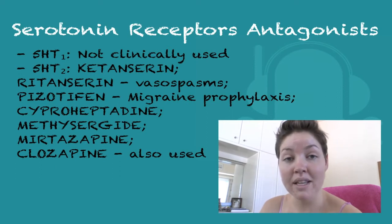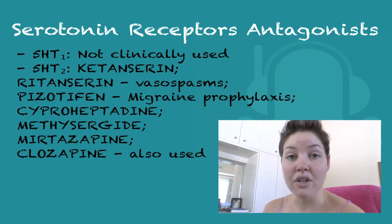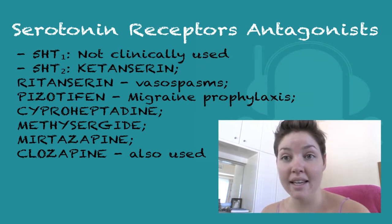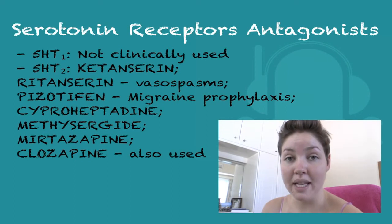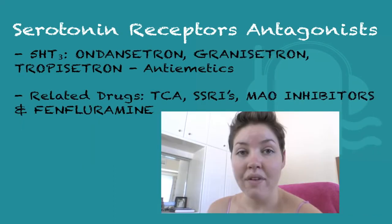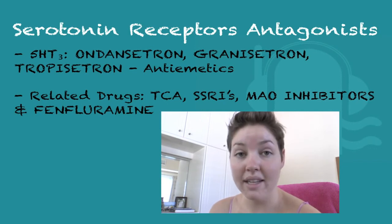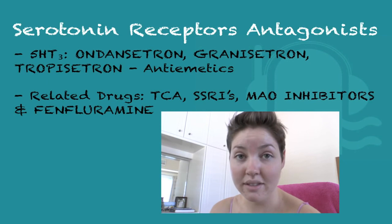Migraines can also occur from serotonin overproduction, which is why we have drugs that are both agonists and antagonists against serotonin. Clozapine is a dopamine 2 receptor blocker and that's the last one used for migraine treatment. 5-HT3 receptor blockers — ondansetron, granisetron, and tropisetron — are antiemetics. They're the first-line therapy with anti-cancer drugs and they don't have large side effects.